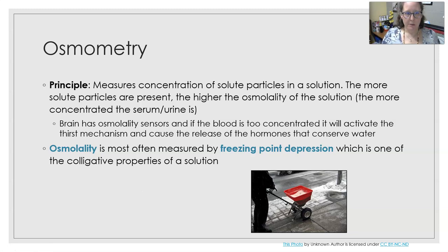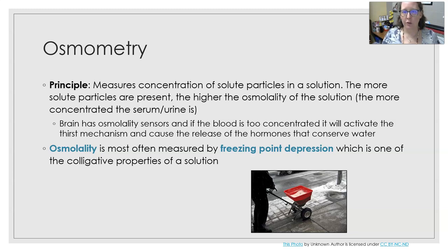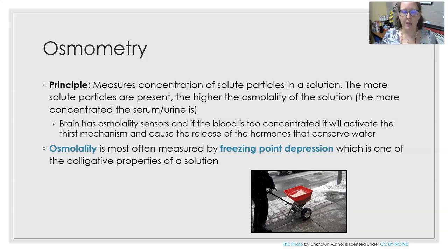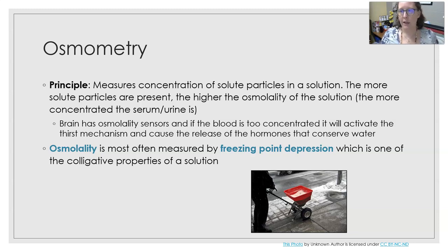So what is osmometry? The principle of osmometry is that it measures the concentration of solute particles in a solution. The more solute particles present in that solution, the higher the osmolality will be — or the more concentrated it is. In the lab, we usually are measuring serum or urine. And of course, the lower the osmolality, the more diluted it is, and either way that could be a problem.